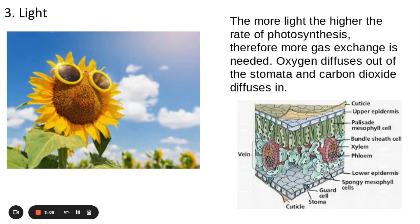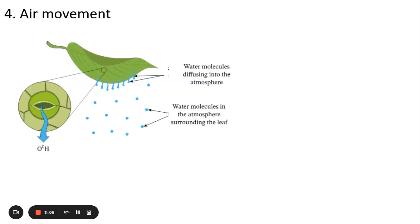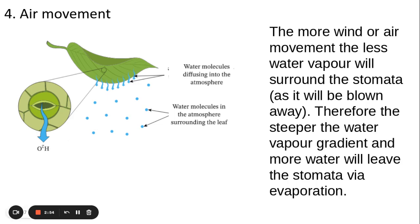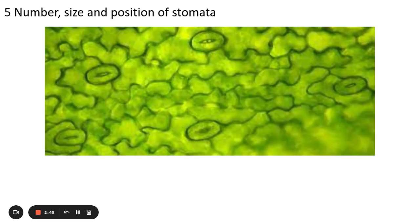If the stomata is going to be open more to exchange these gases, it means I'm going to lose more water vapor through evaporation. Air movement is similar to humidity. If I have a higher wind movement or higher air movement, it means that the water vapor surrounding my stomata will be blown away, so therefore this will cause a steeper water vapor gradient and more water will leave the stomata through evaporation.